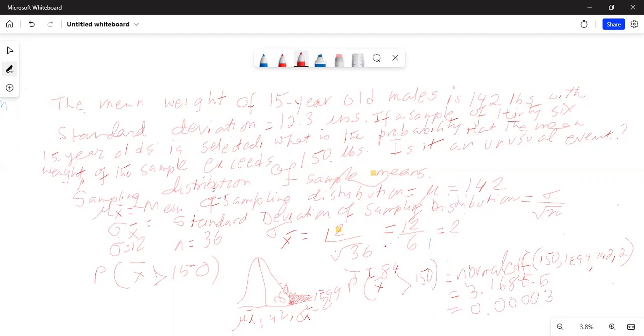Now notice this probability is less than 0.05. So this is an unusual event. Usually any event with probability less than 0.05 is considered an unusual event. Here the probability of the sample mean to exceed 150 is very small, less than 0.05. Therefore, x bar greater than 150 is an unusual event because its probability is less than 0.05.